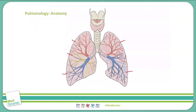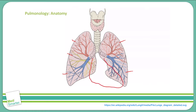The reason the left lung only has two lobes is because the heart takes up a lot of space in the left side of the chest and the thorax. As you can see here, this is about the typical location of the heart.